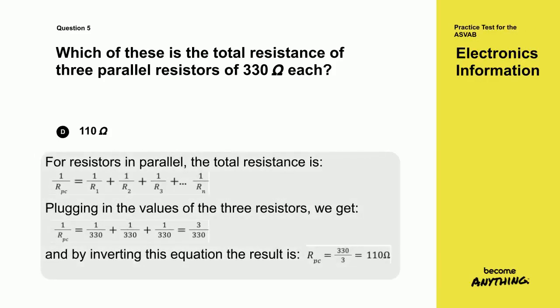For resistors in parallel, the total resistance is the formula below. Plugging in the values of the three resistors, we get the following. And by inverting this equation, we get the final result.